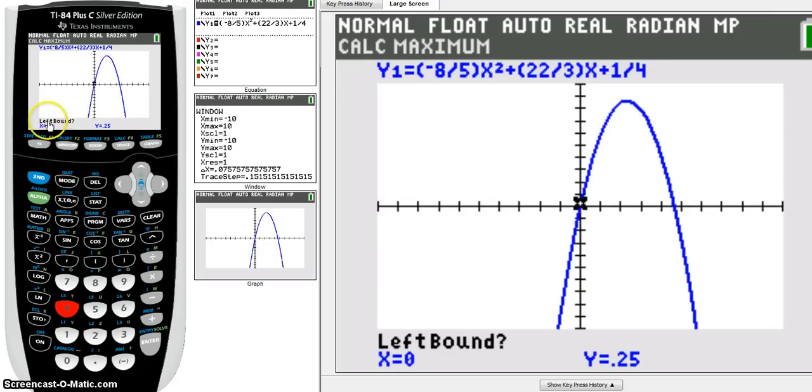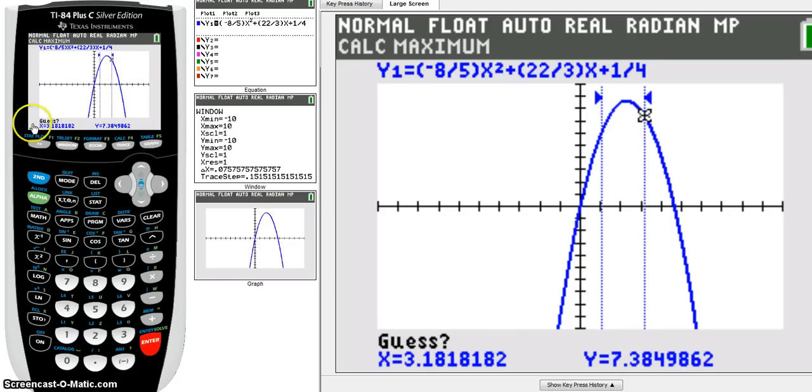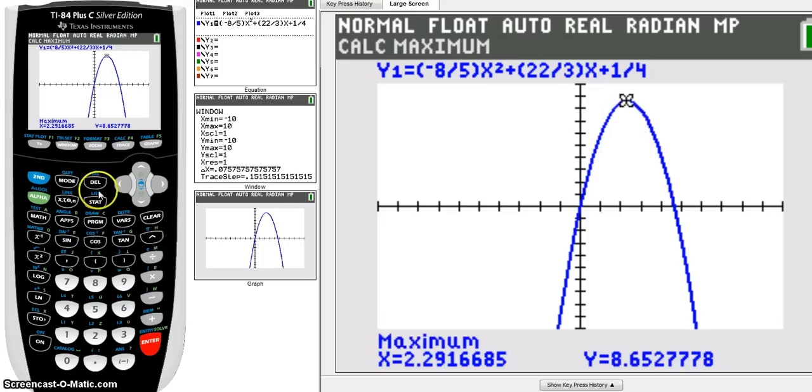So again, we're going to choose option 4. So I'm just going to press 4. And it says find the maximum, so left bound. So what it means is just go somewhere to the left of your maximum and use your left and right arrow key. So just get somewhere on the left-hand side of your maximum and press enter. And then we go to the right-hand side of our maximum, so arrow right, so that we're on the other side of the maximum somewhere. Just somewhere to the right of it and press enter again. And then it says guess. Yes, I want you to guess calculator and tell me what the maximum is. And it says the maximum is 2.29, 8.65. And we're going to write that down as a coordinate pair for the maximum.